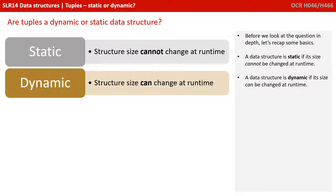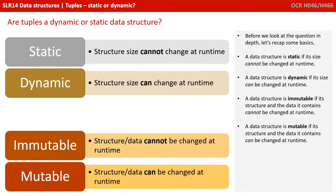Before we look at the question in depth, let's just recap some basics. A data structure is static if its size cannot be changed at runtime, and it's dynamic if its size can be changed at runtime. A data structure is said to be immutable if its structure and the data it contains cannot be changed at runtime, and mutable if the structure and the data it contains can be changed at runtime.